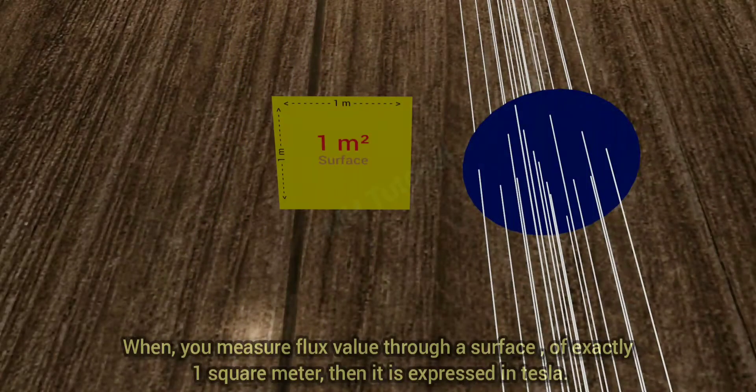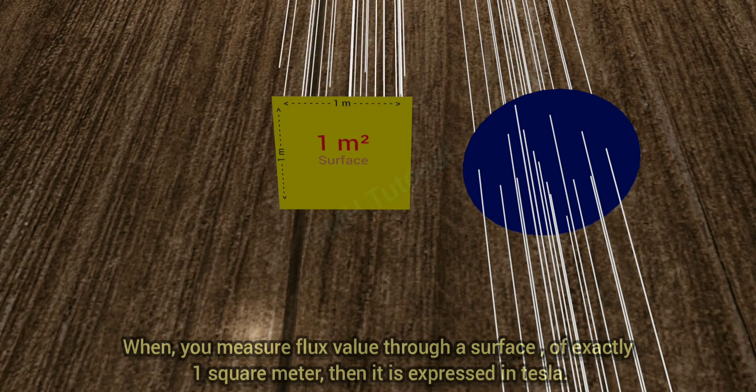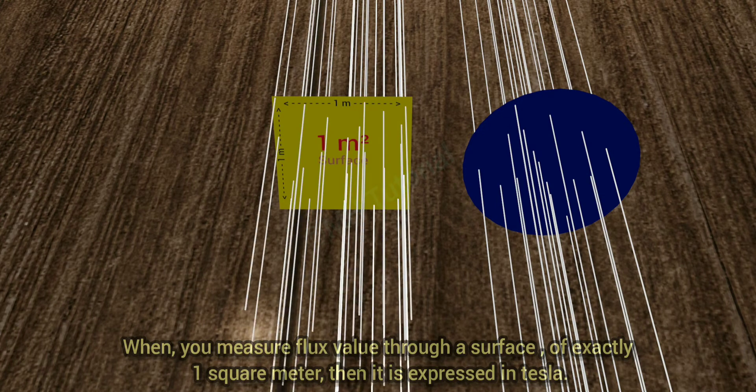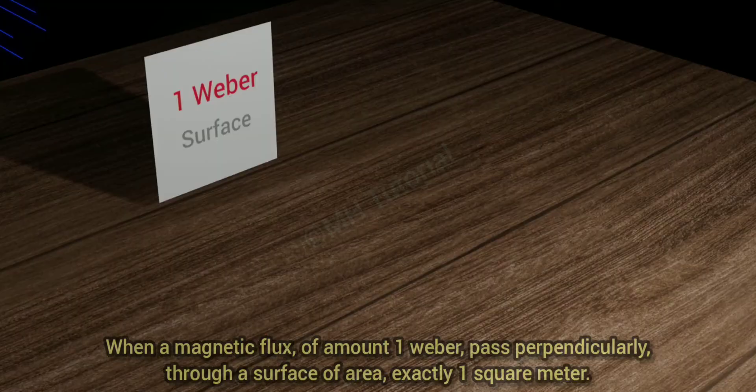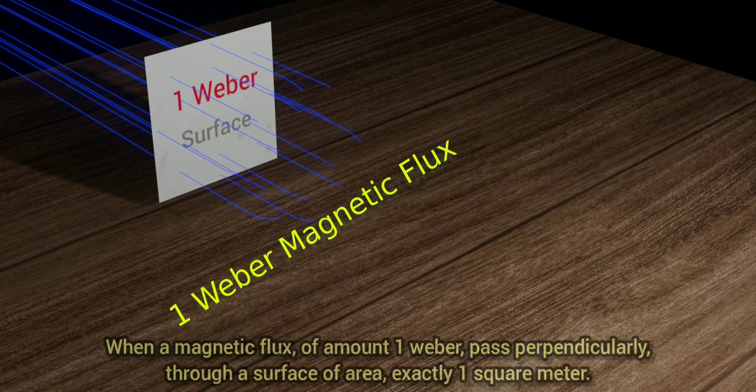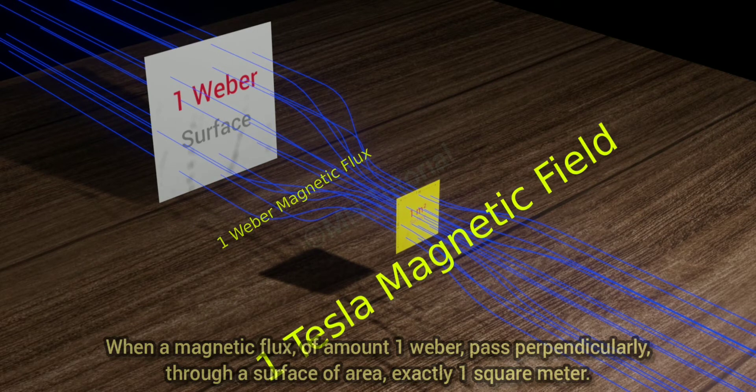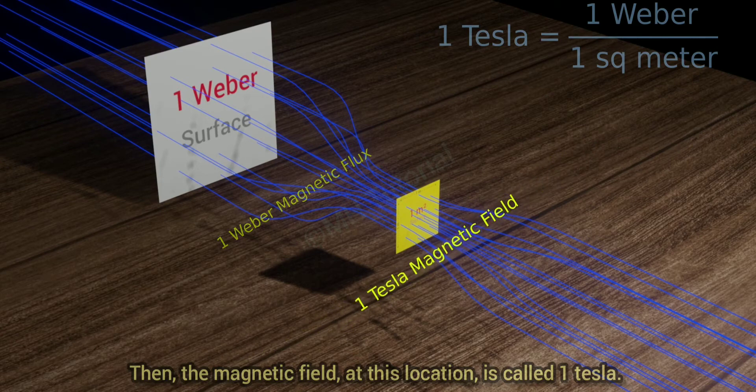When you measure flux value through a surface of exactly one square meter, then it is expressed in Tesla. When a magnetic flux of amount one Weber passes perpendicularly through a surface of area exactly one square meter, then the magnetic field at this location is called one Tesla.